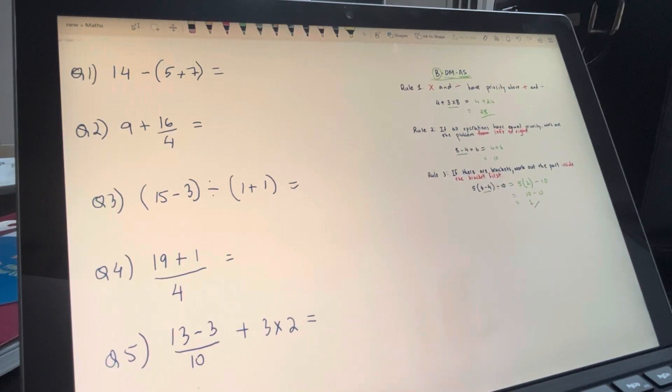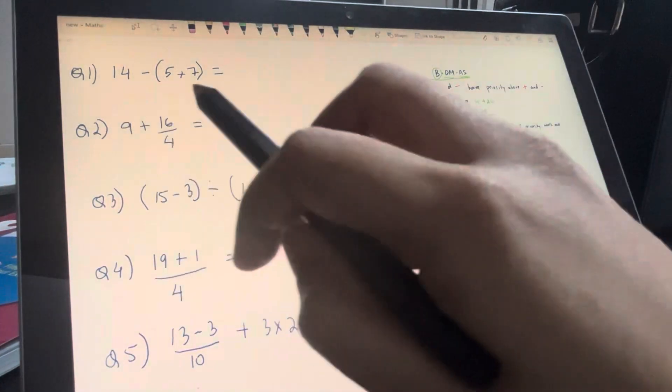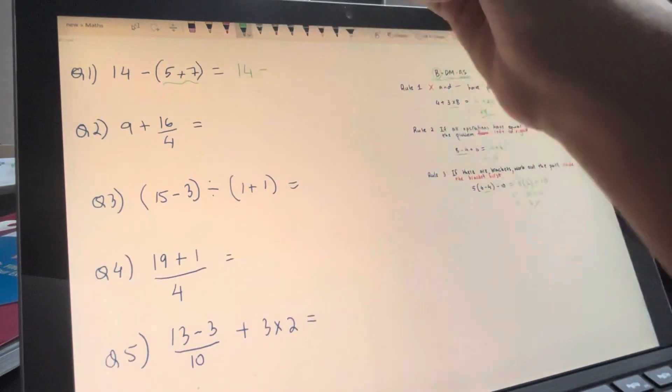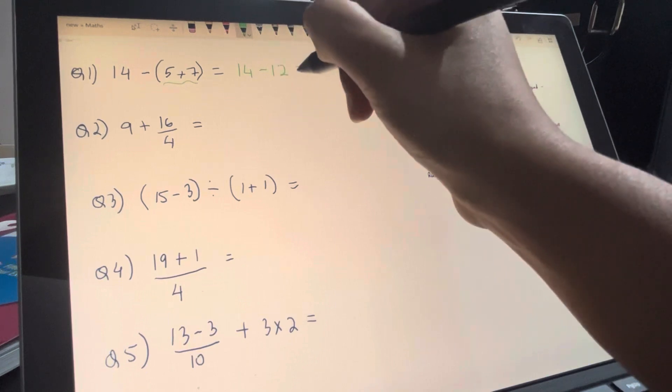Now let's do some questions based on the three rules that we just learned. So number one, 14 minus 5 plus 7. Now we know that we have to do brackets first, so this is going to be 14 minus 12, and that's 2.